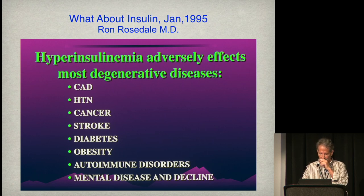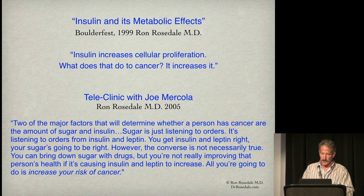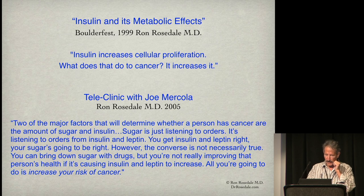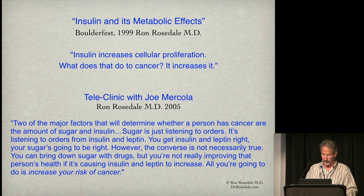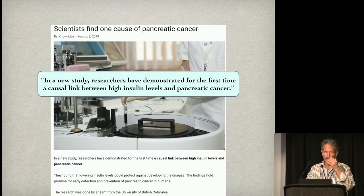Insulin is a growth factor and it causes cancer. Insulin increases cellular proliferation, which increases cancer. Two of the major factors determining whether a person gets cancer are the amount of sugar and insulin. Sugar is just listening to orders from insulin and leptin — get insulin and leptin right and your sugar will be right. However, you can bring down sugar with drugs without improving health if those drugs cause insulin and leptin to increase, which is what almost all the drugs do. All you're going to do is increase your risk of cancer.